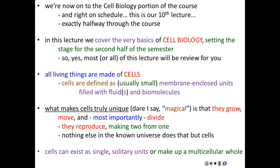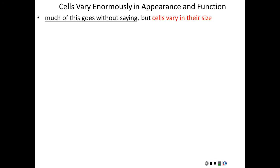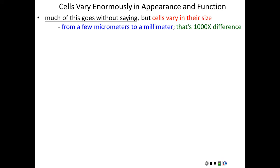Cells can exist as single, solitary units — bacteria, yeast, protists such as amoeba, euglena, and paramecium. But of course we also have multicellular organisms, also made of cells. Cells can vary enormously in the way that they look as well as in what they do. Cells vary in their size — some cells are a few micrometers across, that is one millionth of a meter, to millimeters across, which is one thousandth of a meter. Keep in mind, from micrometer to millimeter is one thousand times difference in size.